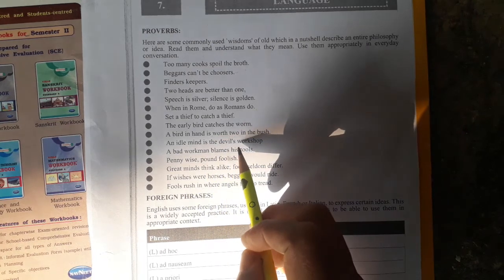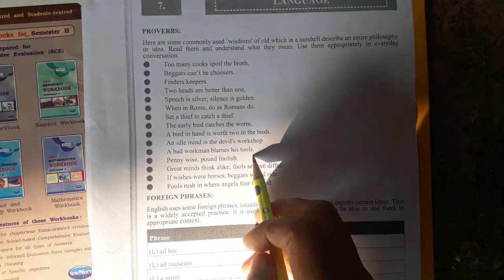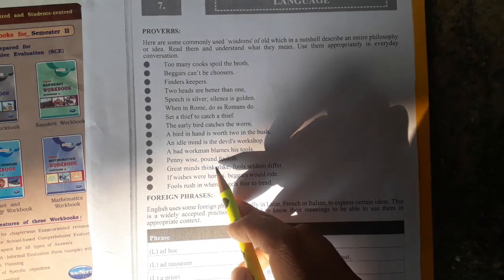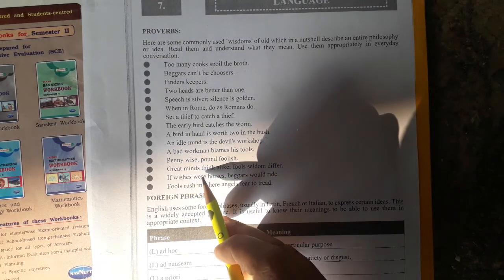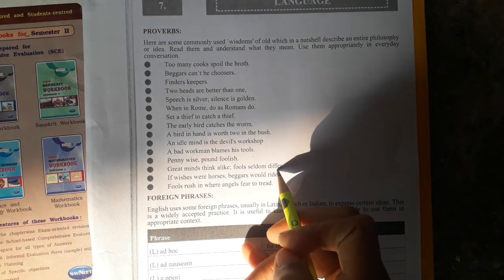An idle mind is the devil's workshop. A bad workman blames his tools. Penny wise, pound foolish. Great minds think alike.